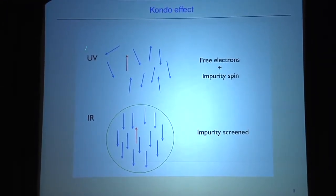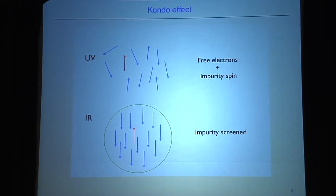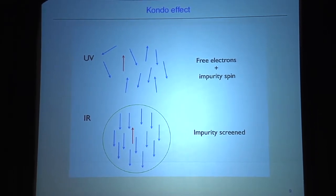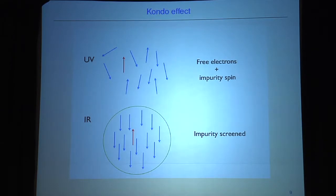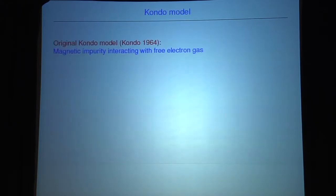When you flow to the IR you have a strongly coupled situation where these electrons screen this impurity and form a collective new bound state with the impurity, such that when you go far away you can't see it anymore. Note the RG flow idea behind this.